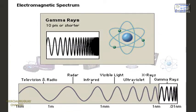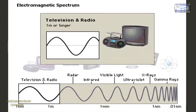Gamma rays have an extremely high frequency and short wavelength. Radio waves have a much lower frequency and much longer wavelength.